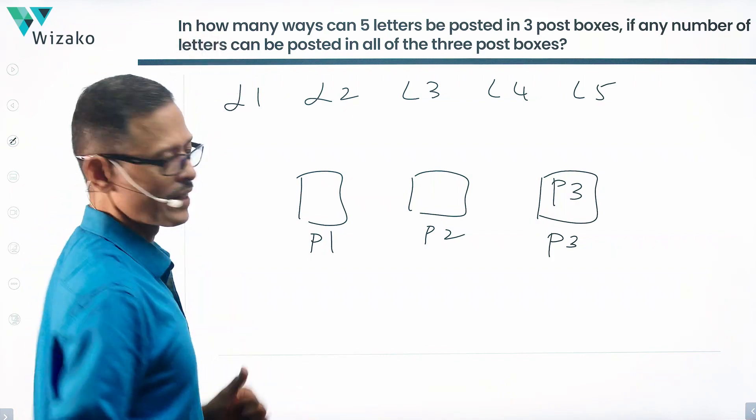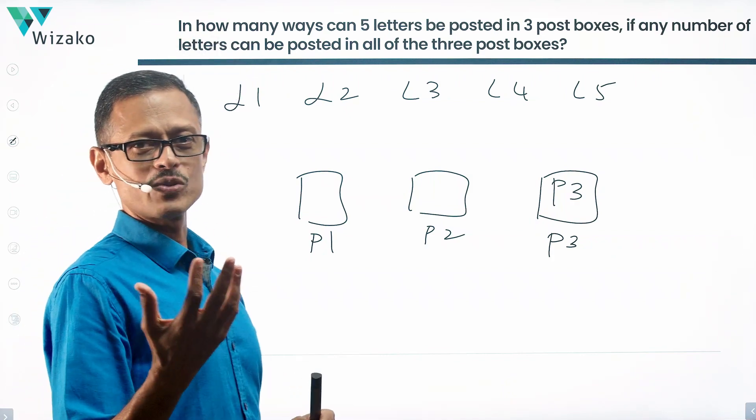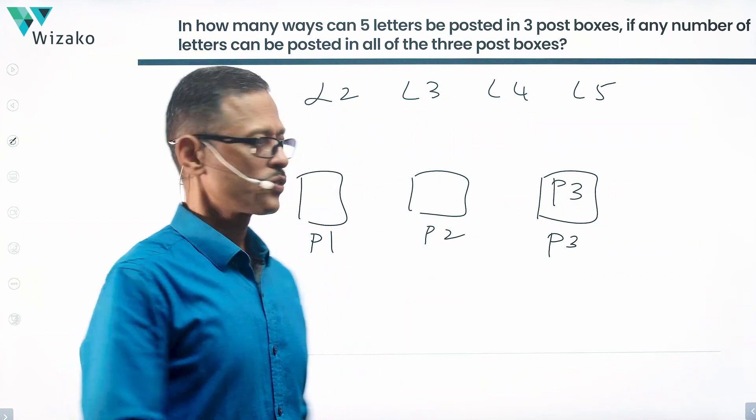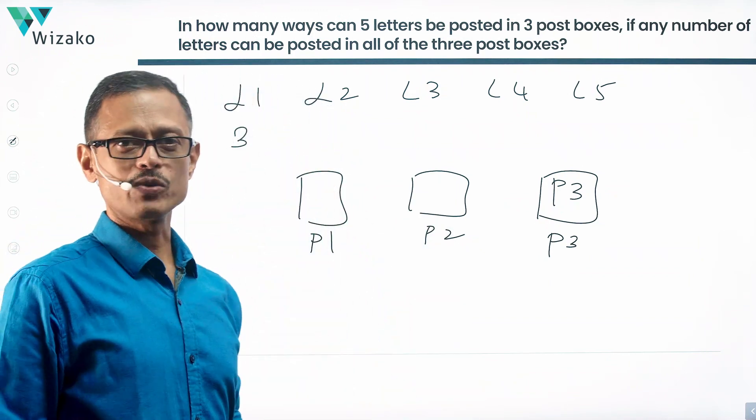Let's start with the first letter. I'm picking letter one. In how many ways can I post it? It can go into box one or box two or box three. So the first letter has got three ways in which I can post it.